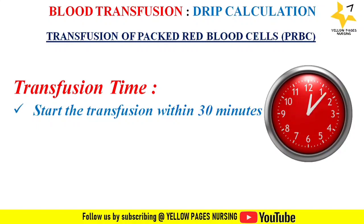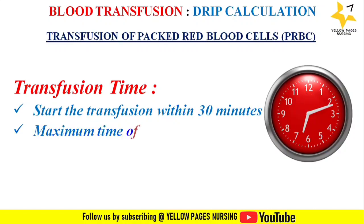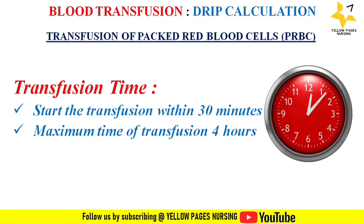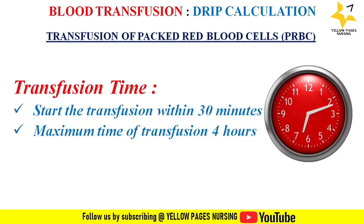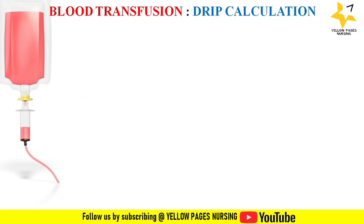When we receive a blood unit from the blood bank, the transfusion should begin within 30 minutes of receiving the blood, and the maximum time for blood transfusion will be four hours.